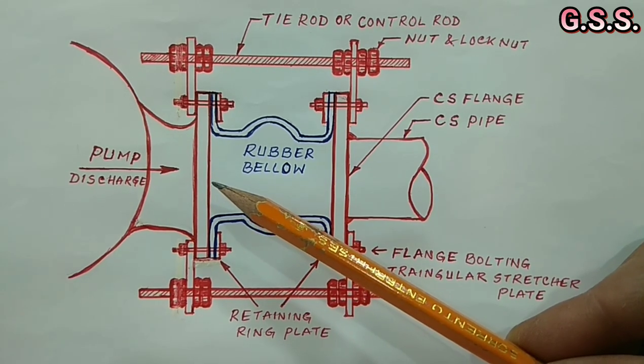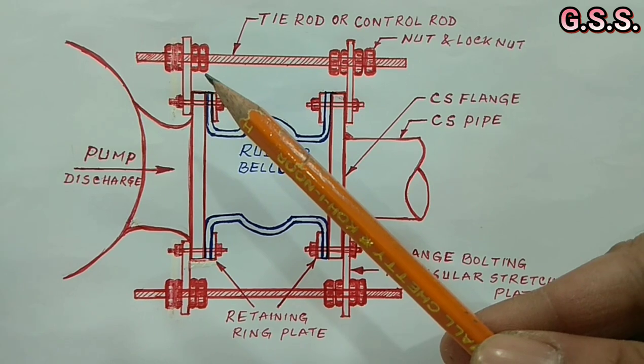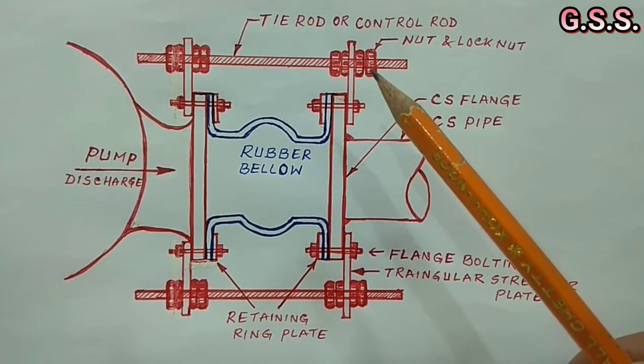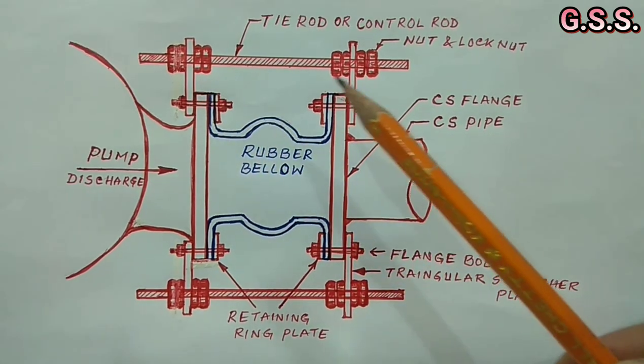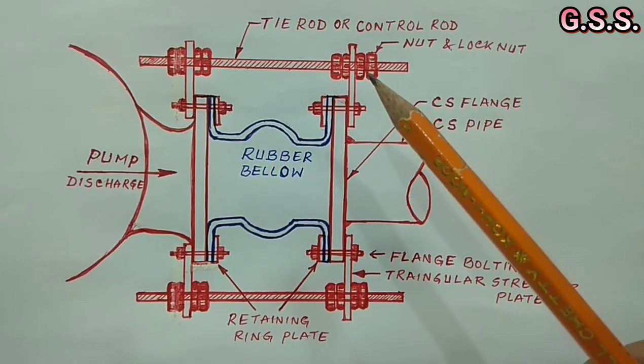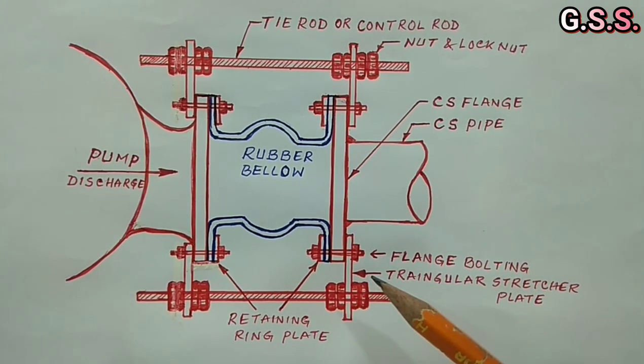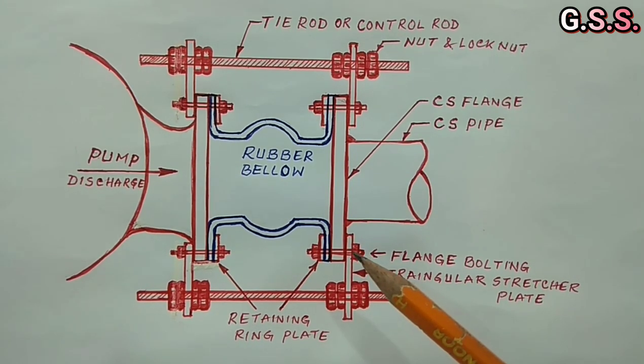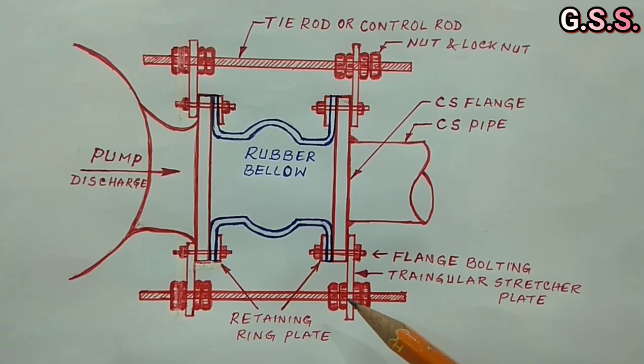Now, we have to tie tie rod nuts with lock nuts on both sides of the bellow. There are total eight number of nuts, four nuts and four lock nuts. Tie rod is connected with the flange with triangular stretcher plate having three holes: two holes passes through flange bolting and one hole for the tie rod.